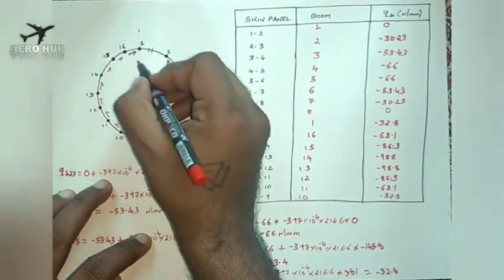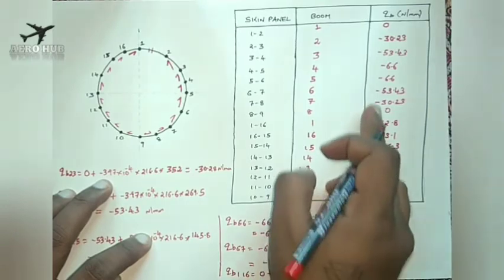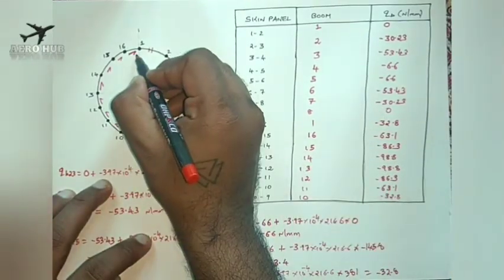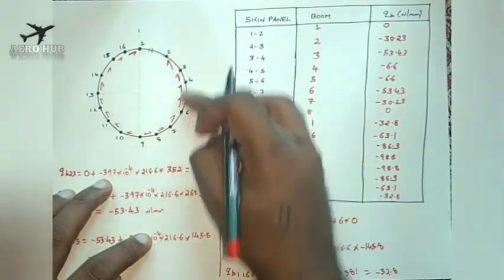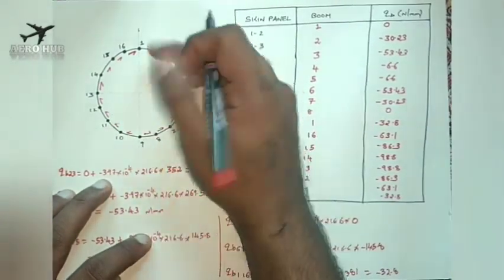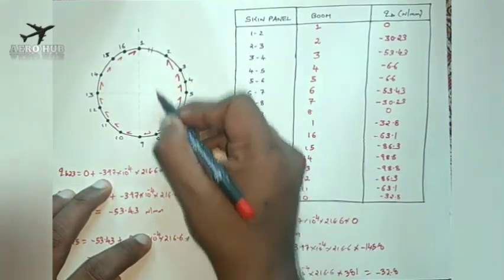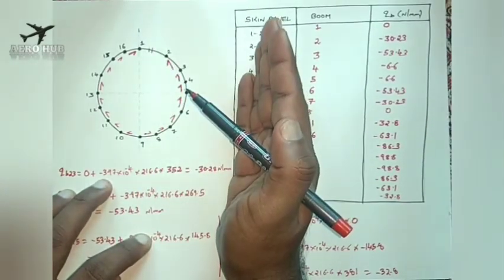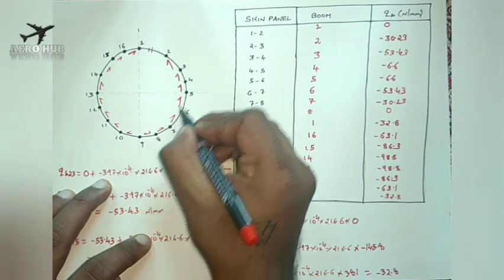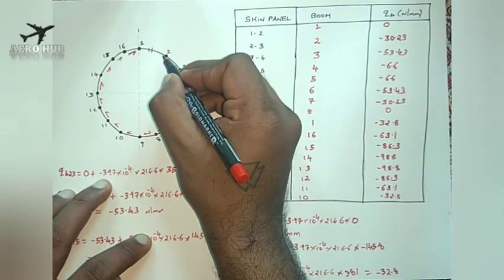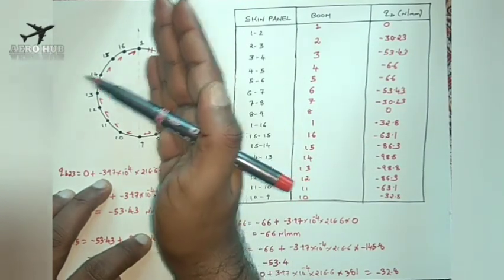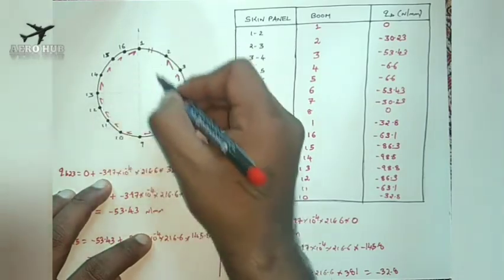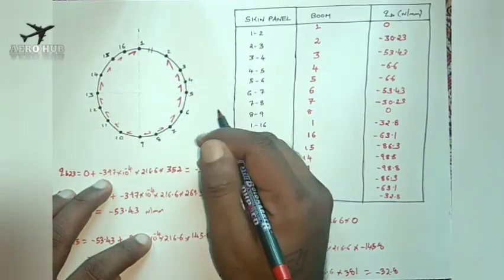We assumed the flow from 1 to 16 in that direction, but we got negative values, so the actual flow is from 16 to 1. On the right-hand half of this section, we get flow in an anti-clockwise direction, and on the left-hand side, we get a shear flow in the clockwise direction.